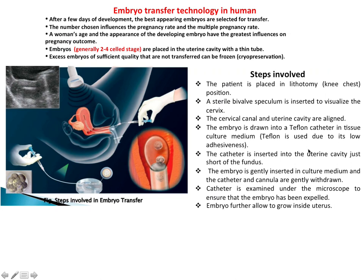What is embryo transfer technology? After a few days of development, the best-appearing embryos are selected for transfer. Embryos generally at the 2 to 4 cell stage are placed in the uterine cavity with a thin tube, and excess embryos of sufficient quality that are not transferred can be cryopreserved. The steps involved: first, the patient is placed in lithotomy position — also called knee and chest position — then a sterile bivalve speculum is inserted to visualize the cervix.